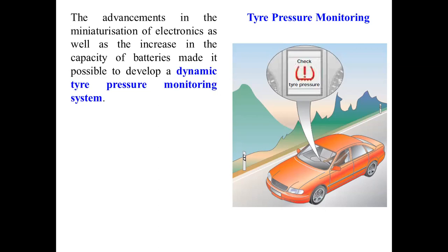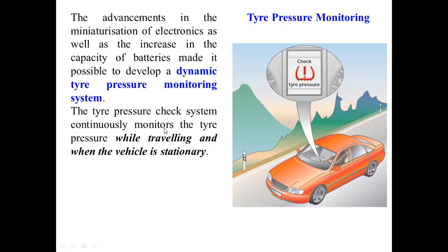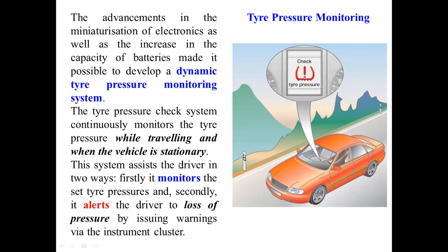Advancements in miniaturization of electronics and increased battery capacity made it possible to develop dynamic tire pressure monitoring systems. There are two types: static, when the vehicle is not moving, and dynamic, when monitoring tire pressure while the vehicle is in motion. The tire pressure check system continuously monitors tire pressure while traveling and when stationary, assisting the driver by monitoring set tire pressure and alerting to pressure loss via the instrument cluster.